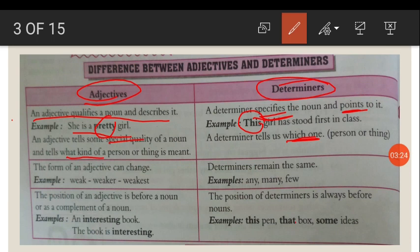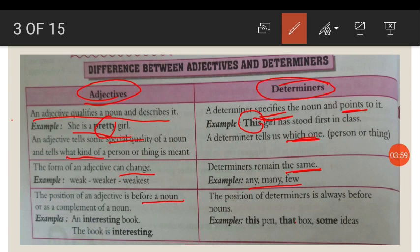Another difference is that the form of an adjective can change — for example: weak, weaker, weakest; tall, taller, tallest. But determiners remain the same; they do not change. Also, the position of an adjective can be before a noun or as a complement of a noun, whereas a determiner is always placed before the noun.